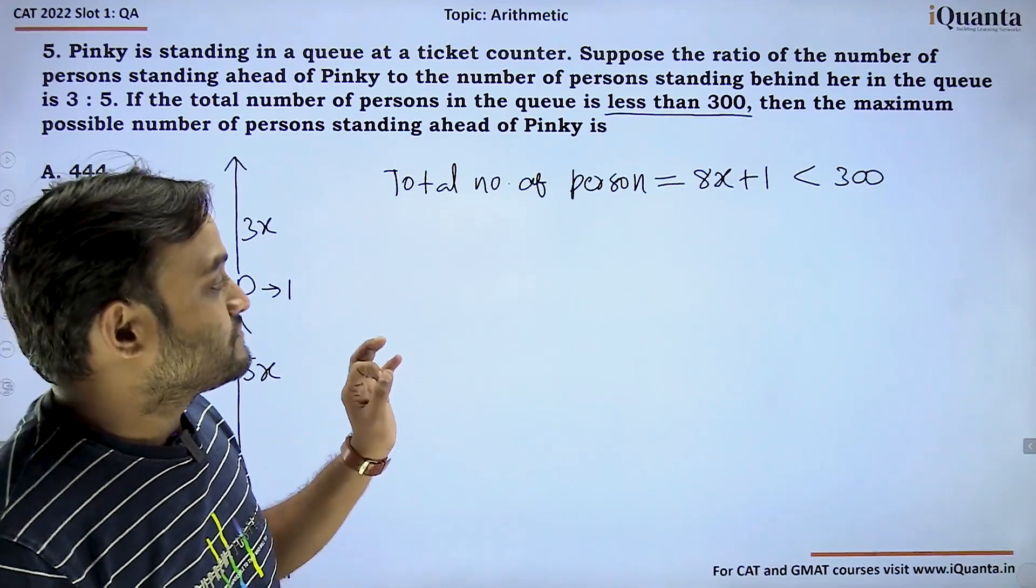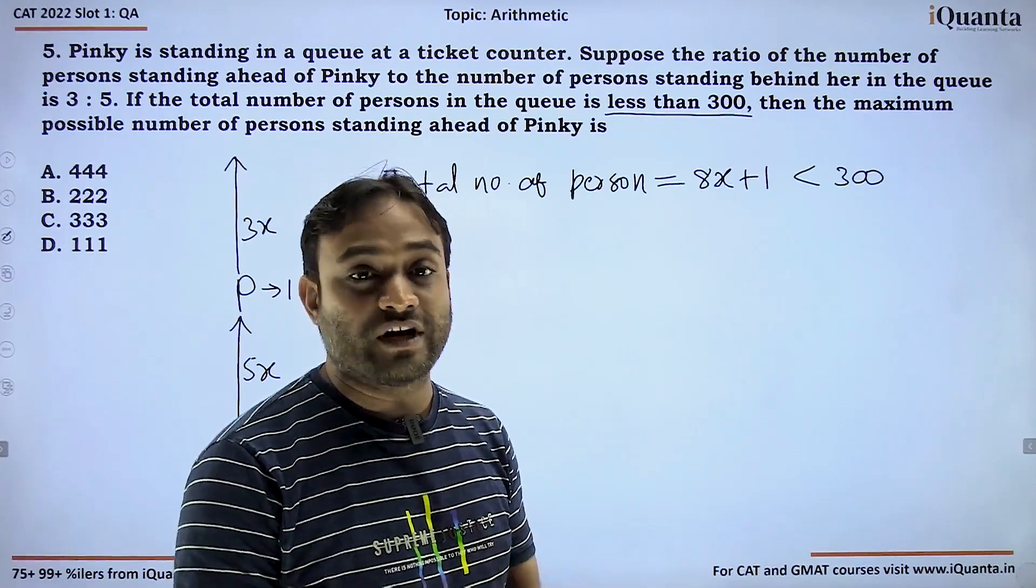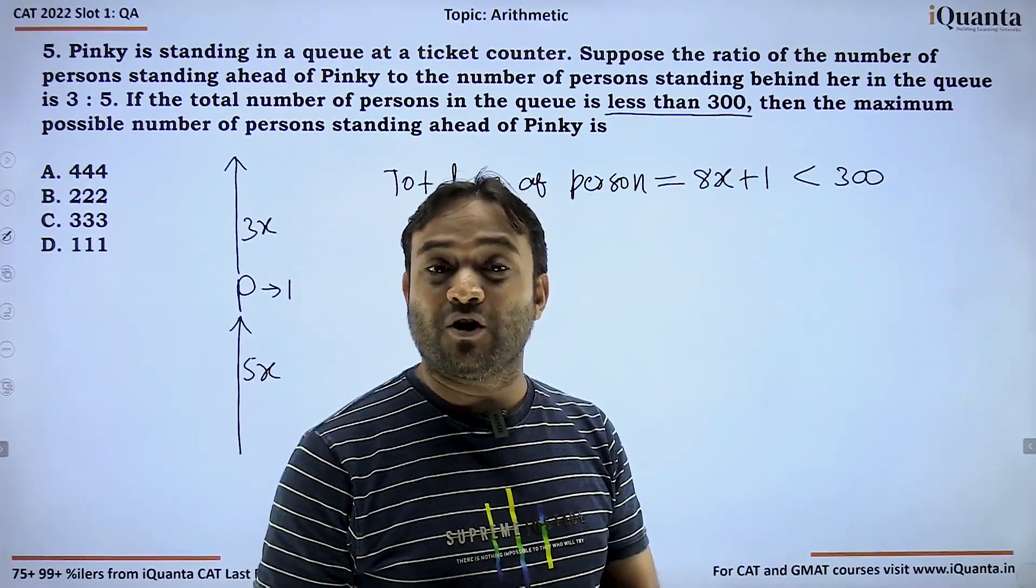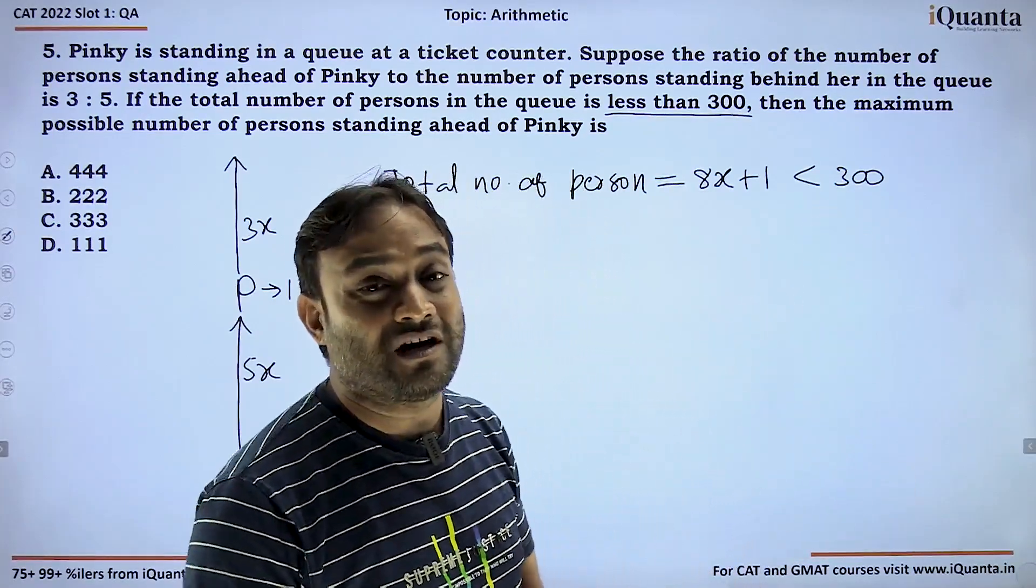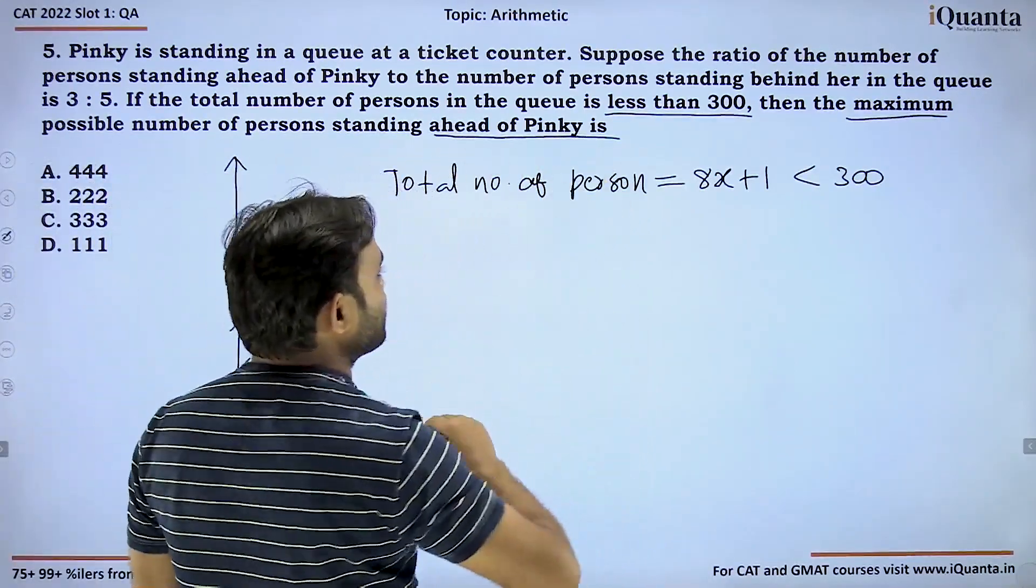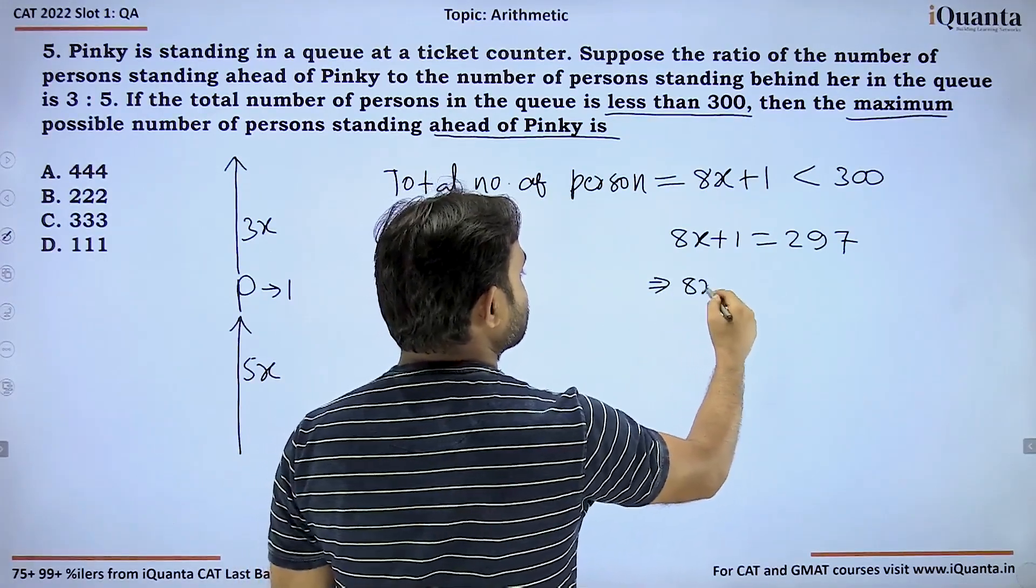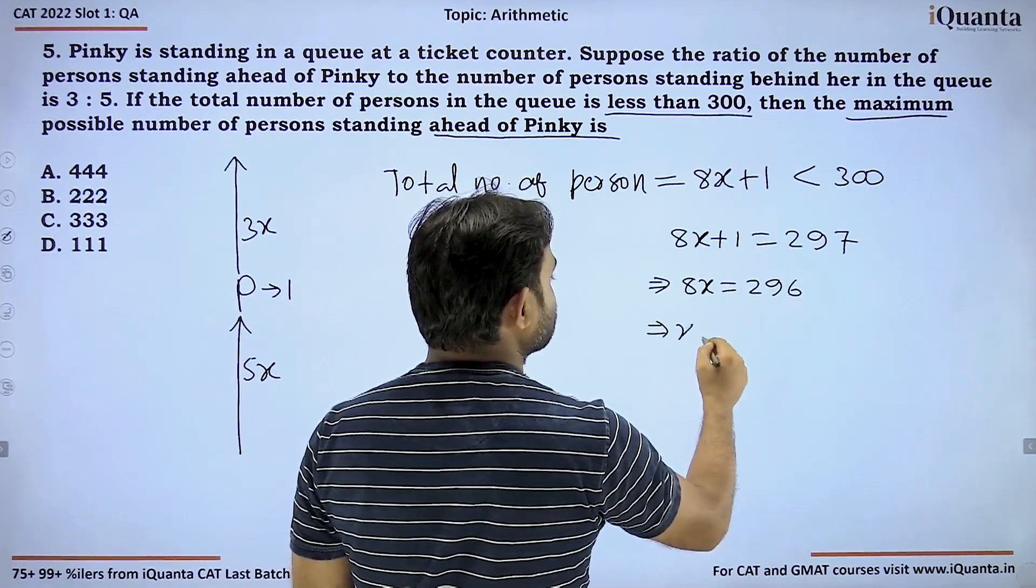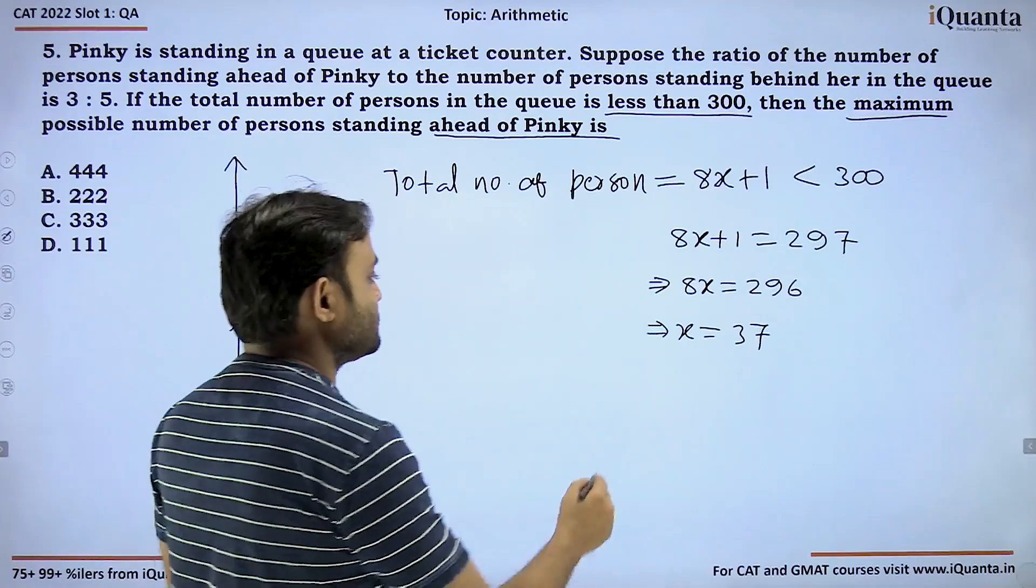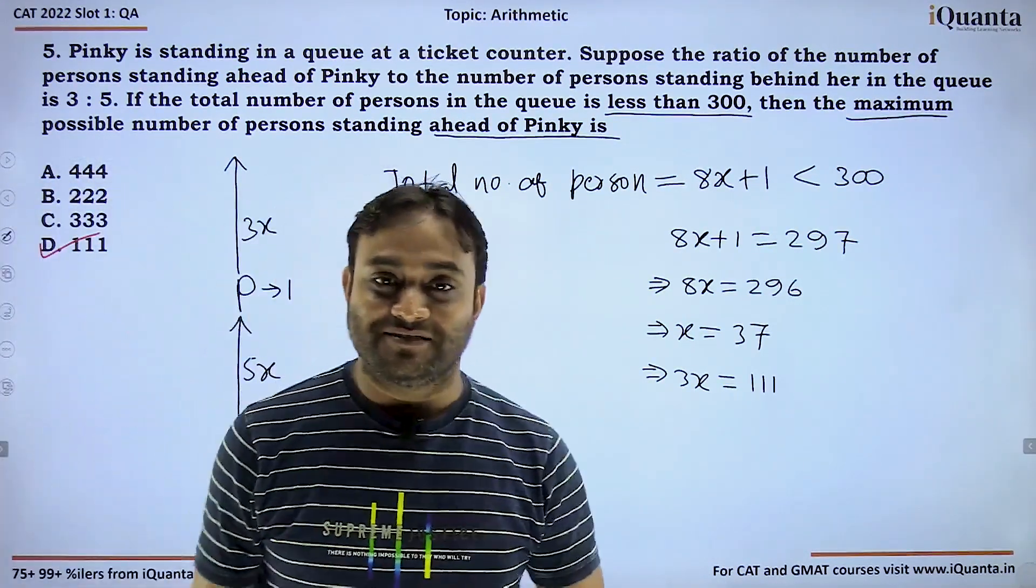Total could be 8 plus 1 equals 9, 16 plus 1 equals 17, or any multiple of 8 plus 1. Closest to 300, 296 is a multiple of 8 plus 1 equals 297, which could be the maximum. The question asks for maximum possible persons standing ahead of Pinky. So 8x plus 1 equals 297, giving 8x equals 296, so x equals 37. Number of persons ahead is 3x which equals 111. Option D is correct.